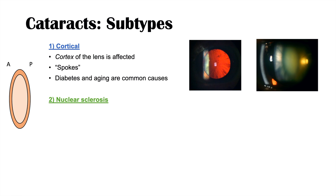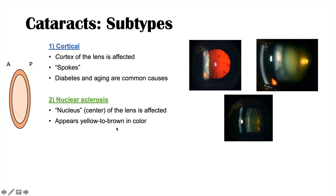The next type is nuclear sclerosis cataracts, where the nucleus — the center of the lens — is affected. It appears yellow to brown in color, which we can call brunescent. When viewed with the slit lamp at an angle, you can see this yellow-to-brown substance in the lens. Aging is often the main cause of this type of cataract.